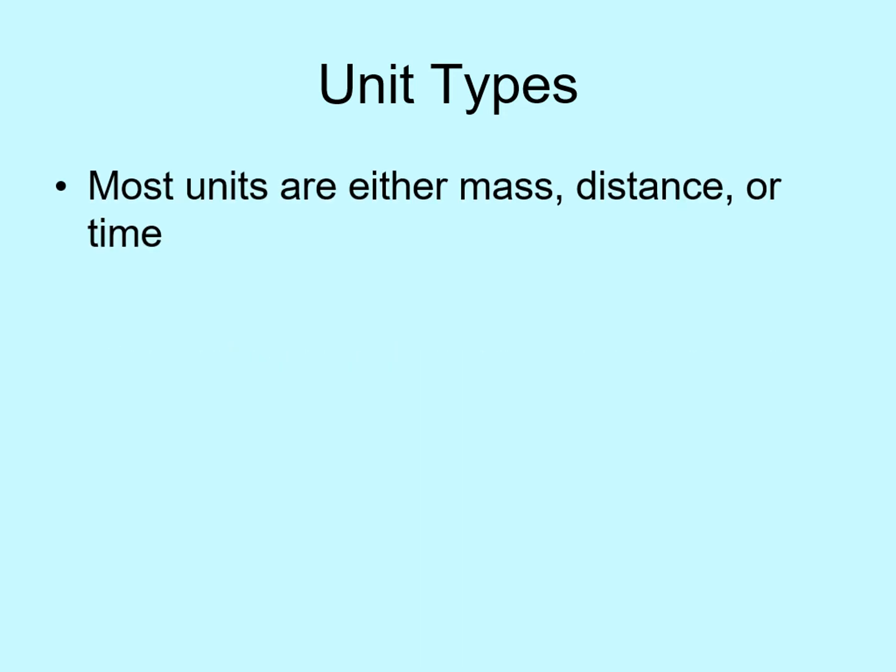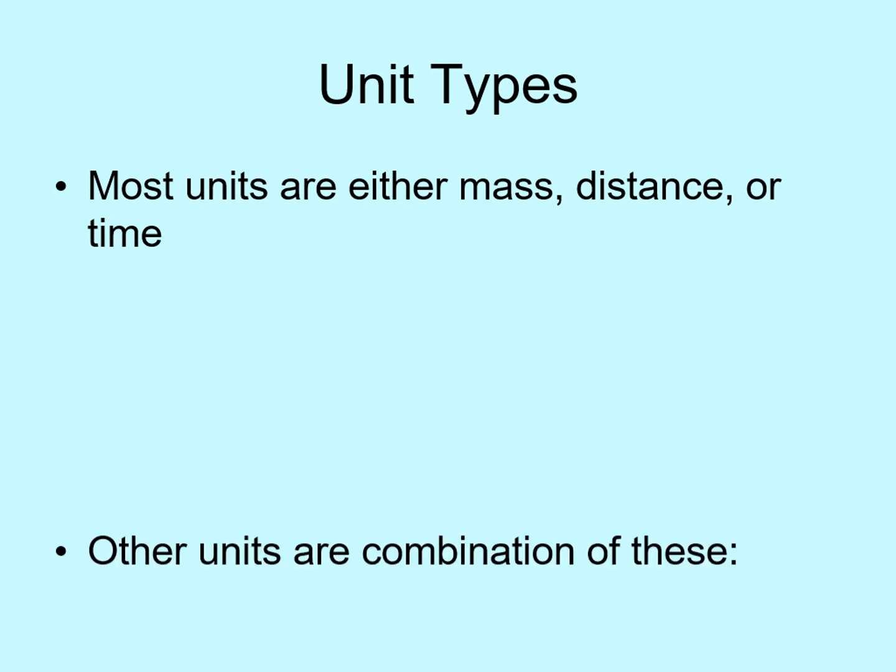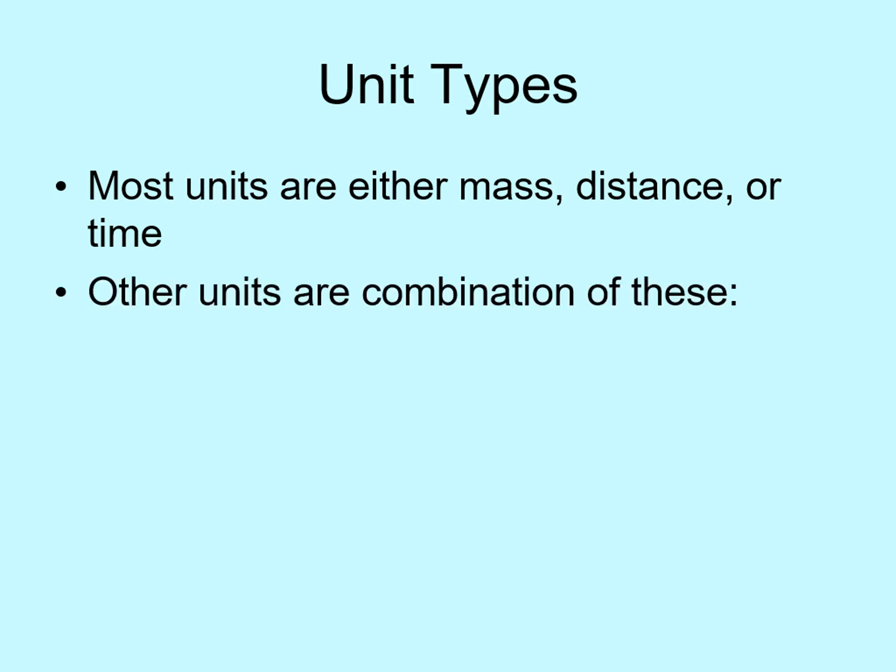There are many different kinds of units — units for measuring speed, weight, money, and so on. But in this class, almost all of the units we use are made up of combinations of just three types: units of mass, units of distance, and units of time. So whenever we're working with units, you want to make sure you know how they relate to these three.